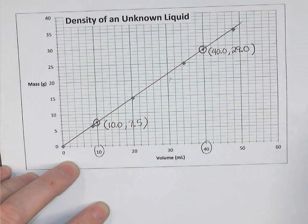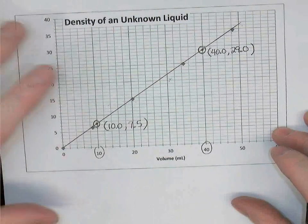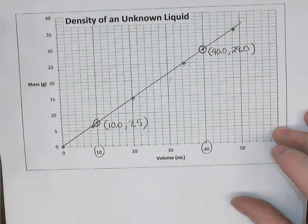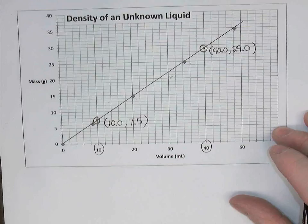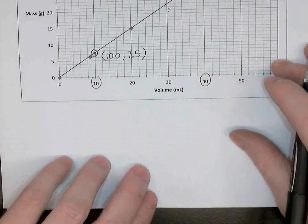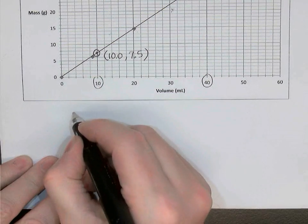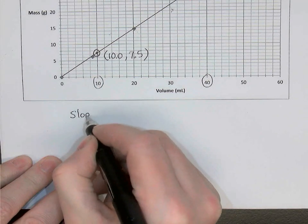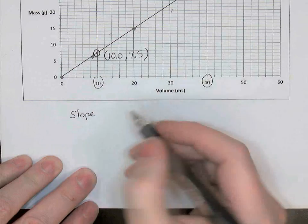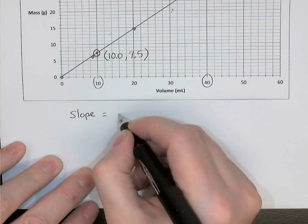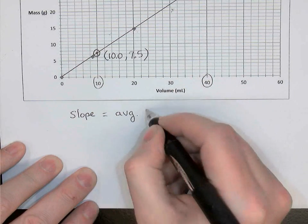Okay, so there's my two points. So there's step one. Choose two points on the line and record their coordinates. Now to find the average density of this substance, what I'm going to use is the slope of the line. The slope of the line is related to the steepness of the line. And it's equal to the average density.